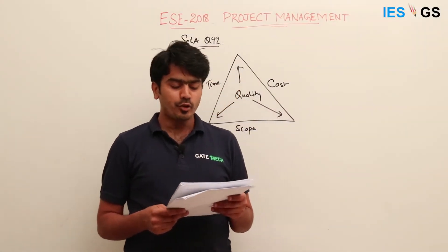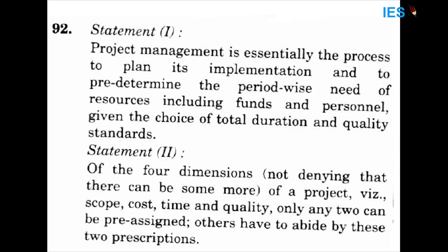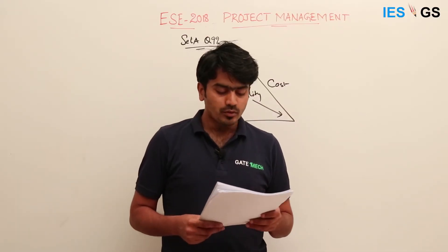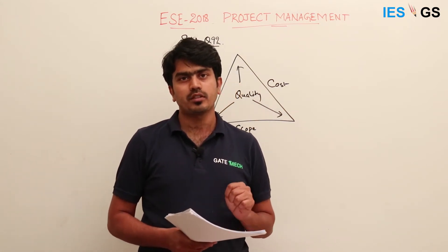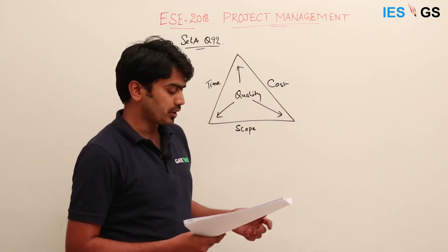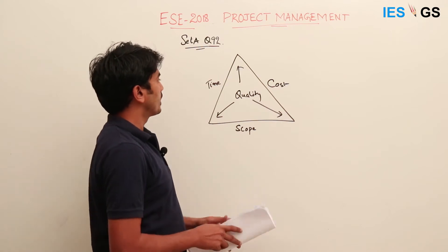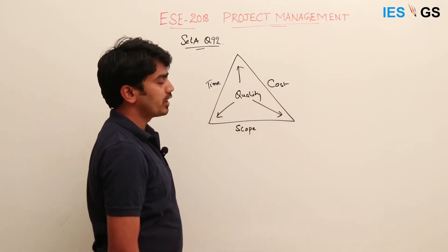The next question is number 92. Statement one is: project management is essentially the process to plan its implementation and to predetermine the period-wise need of resources including funds and personnel, given the choice of total duration and quality standards. Statement two is: of the four dimensions of a project — scope, cost, time, and quality — only any two can be pre-assigned; others have to abide by these two. This relates to the project management triangle.